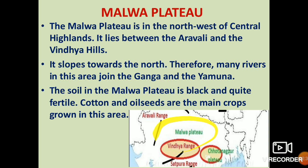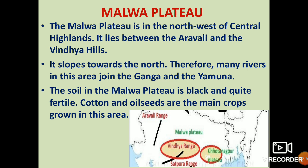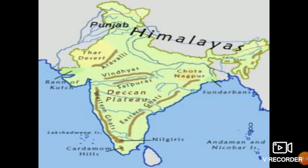The soil found in the Malwa Plateau is black soil, which is very fertile. Cotton and oil seeds are the main crops grown here. Below the Aravli and Vindhya Ranges, you can see the Malwa Plateau on the map, with the Vindhya and Satpura Range also visible.